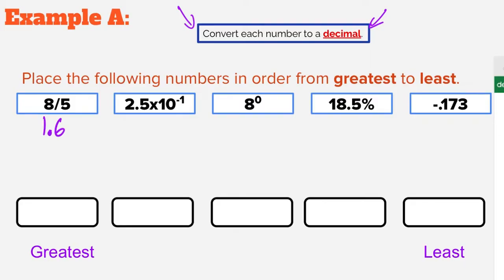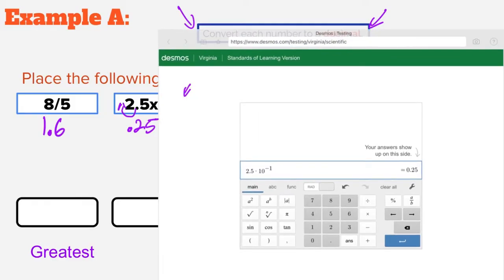Our next number is in scientific notation: 2.5 times 10 to the negative first. A negative exponent means our number is going to be smaller, and it tells us to move our decimal one place to the left, giving us 0.25. If you forget that rule, you can use the decimals calculator — type in 2.5 times 10 to the negative first and it gives you 0.25 on the right-hand side.